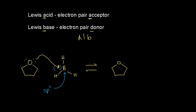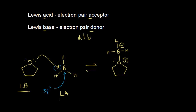Drawing the product of this acid-base reaction: the oxygen retains one lone pair while the other lone pair formed a bond with the boron, which is still attached to its hydrogens. If you know formal charges, you can calculate a +1 formal charge on the oxygen and a −1 formal charge on the boron. Since the ether donated a pair of electrons, it is our Lewis base — an electron pair donor. The borane accepted a pair of electrons, so it is our Lewis acid. The Lewis acid and base definition comes up occasionally in organic chemistry, but the most important definition is definitely Brønsted-Lowry, so make sure you understand that concept extremely well.